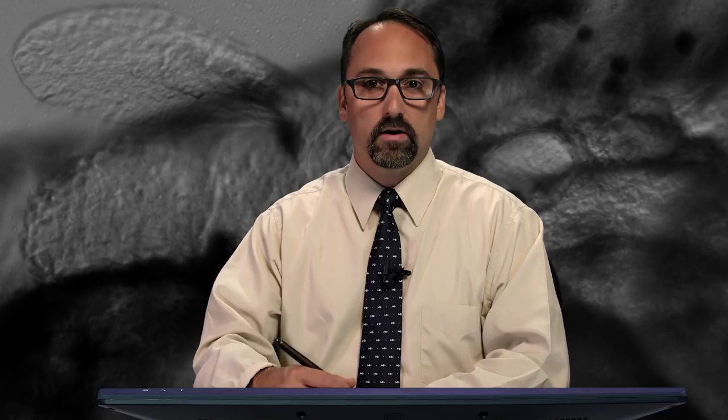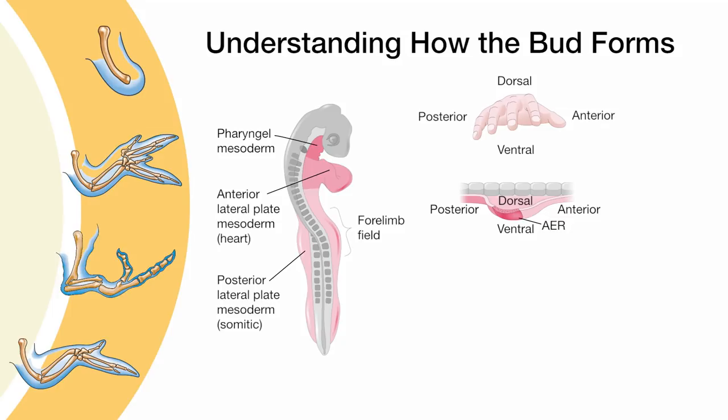Now, important for understanding how this bud forms is knowing that the bud itself has its own anatomy. All of the axes that we identified on your own adult arms are present, even in the little limb bud. It has dorsal and ventral halves, as well as anterior and posterior halves. And relative to the flank of the trunk, its proximal to distal axis extends as the limb bud grows.